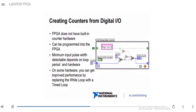An FPGA does not have built-in counter hardware, so if you want to implement a counter, you have to program it in the FPGA. The minimum input pulse width detectable depends on the loop period and your hardware. On some hardware, you can get improved performance by replacing the while loop with a single cycle time loop, which we'll cover in a later lesson.